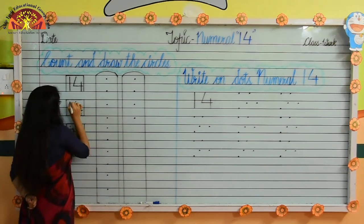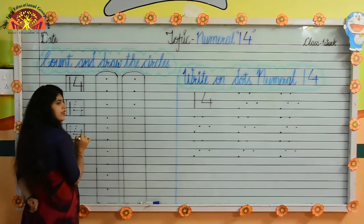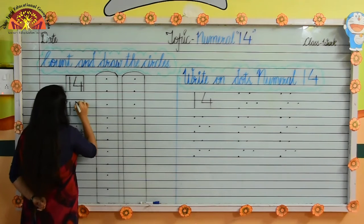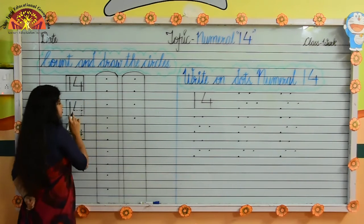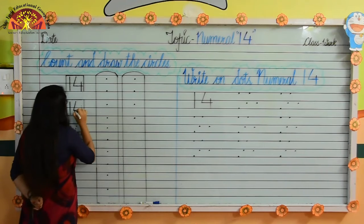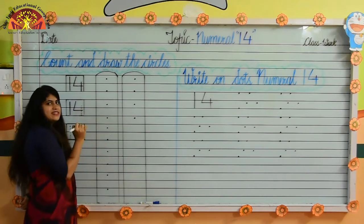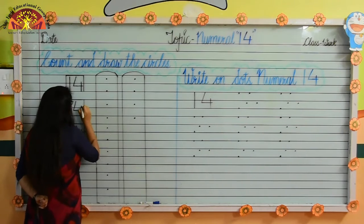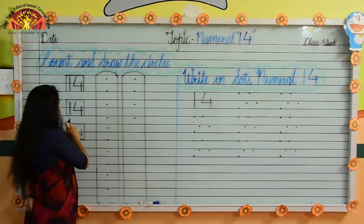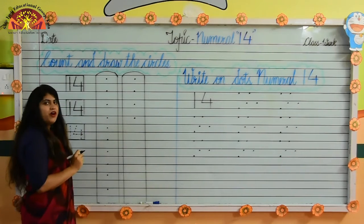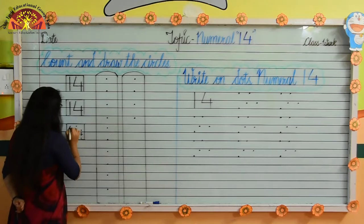Put your crayon here, make standing line, like this. Then make slanting line, stop here. Then make slanting line, like this. Now make standing line, like this. 14.